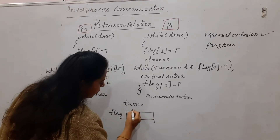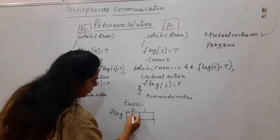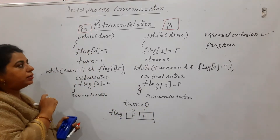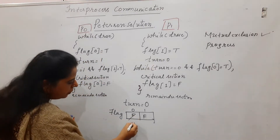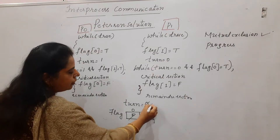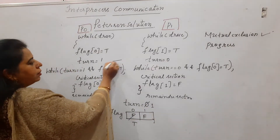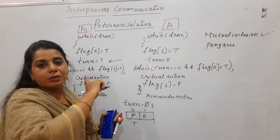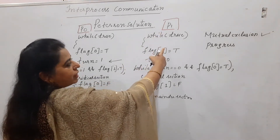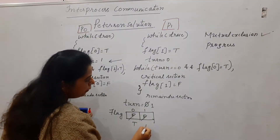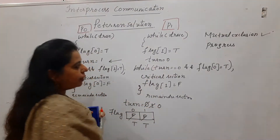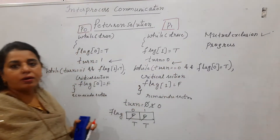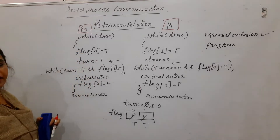Re-initializing: flag array has two slots, both set to F; turn is zero. P0 starts executing: sets its flag to T, sets turn equal to one. A context switch happens — control goes to P1. P1 sets its flag to T and changes turn equal to zero. Then context switch happens again and P0 takes control.